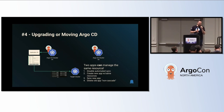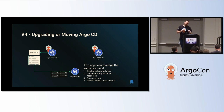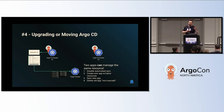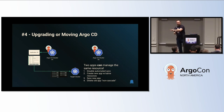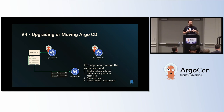To safely upgrade or move Argo CD, create a whole new Argo CD instance — potentially on a different cluster. Then disable automated sync either via sync window or by updating your applications. Create the new applications pointing at the same resources, sync from the new applications to change the annotation tracking to the new Argo CD, and then safely delete the old apps non-cascading and delete the old Argo CD.